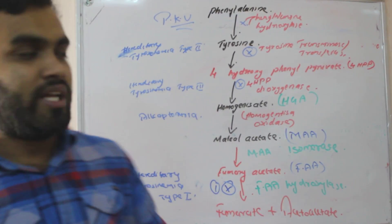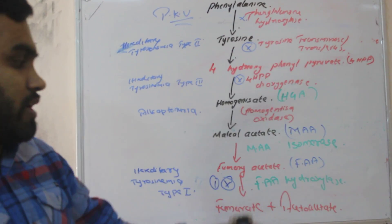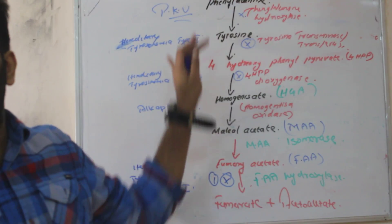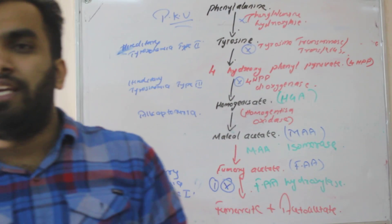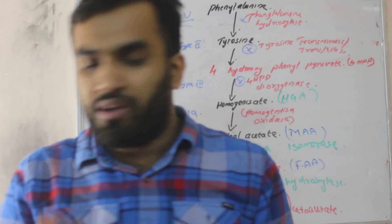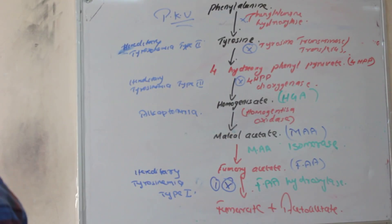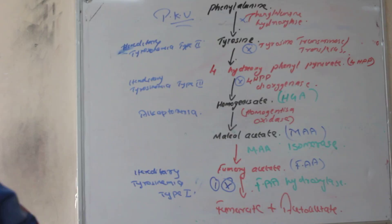So this is the important metabolism, very easy to remember. The enzymes are important, and remember the disease. Now we will study about alkaptonuria briefly. So next our topic is alkaptonuria.